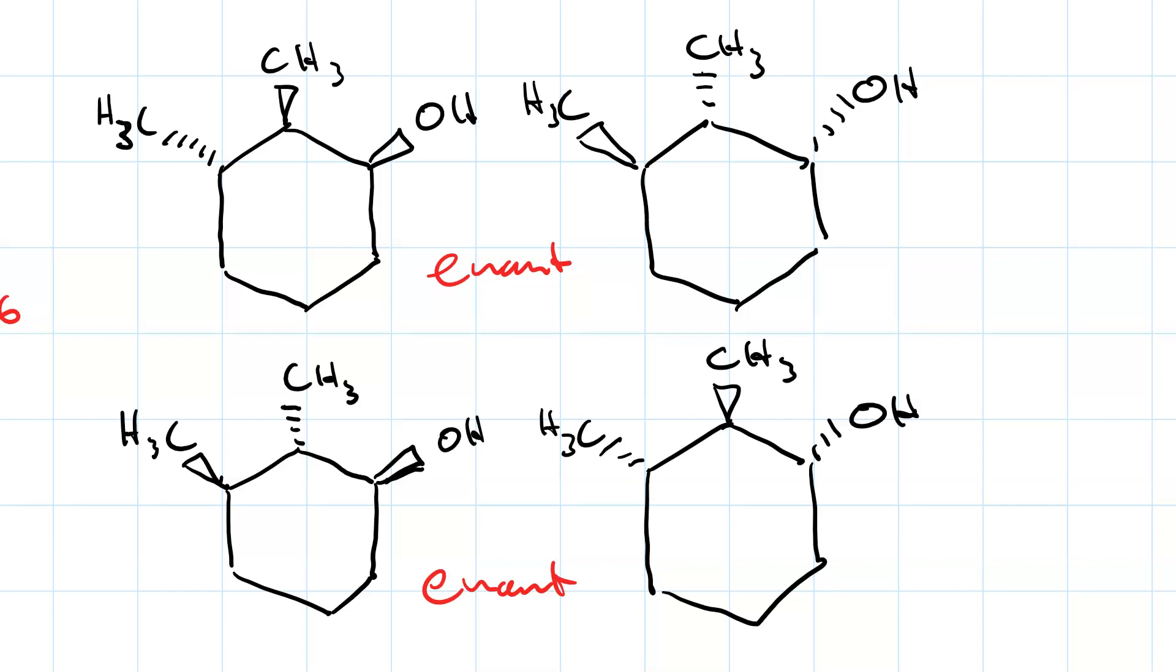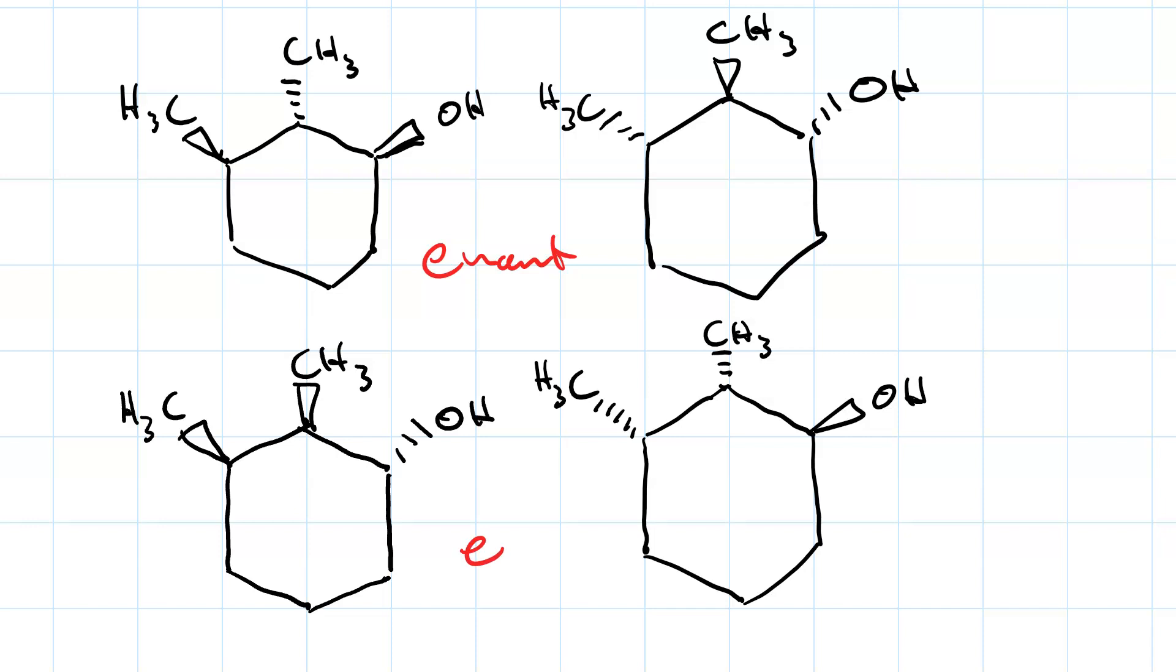One more set to draw. And that'll be inverting the hydroxyl group from the original. So there's my final pair of enantiomers. Wedge, wedge, dash, and dash dash wedge. So that's a total of eight.